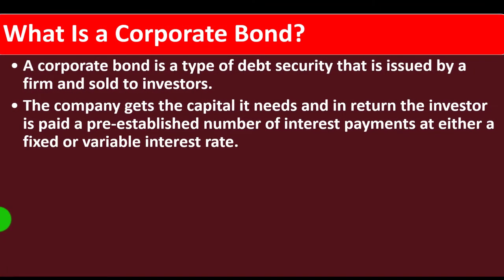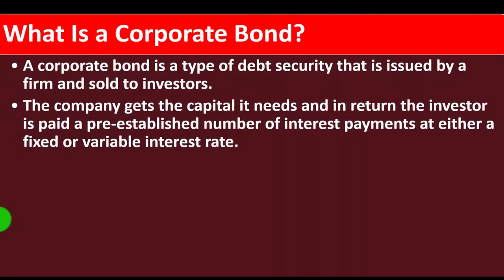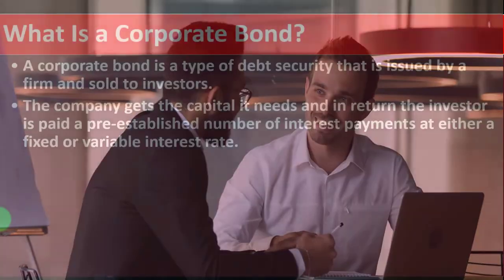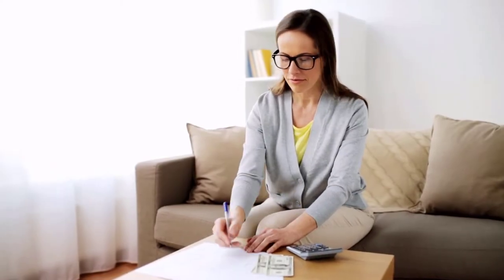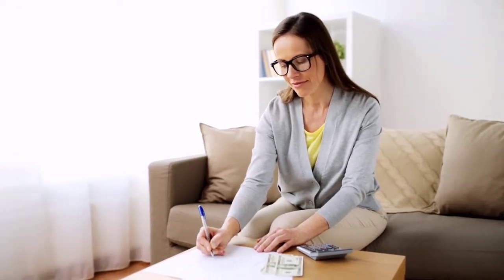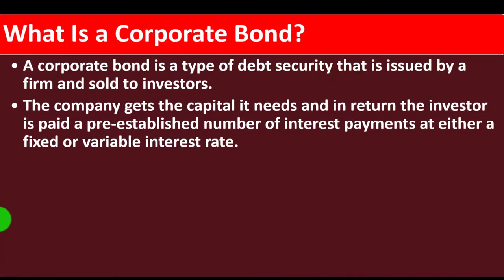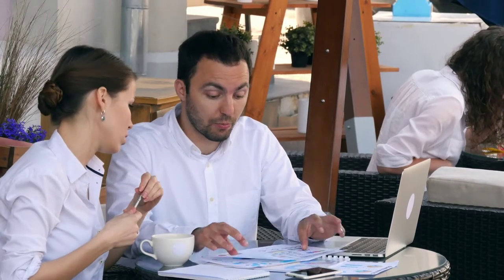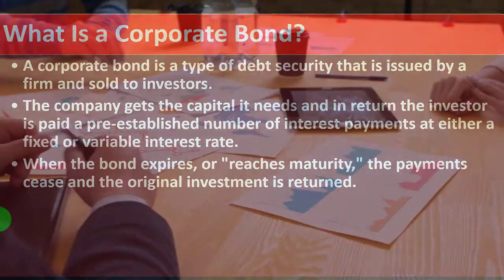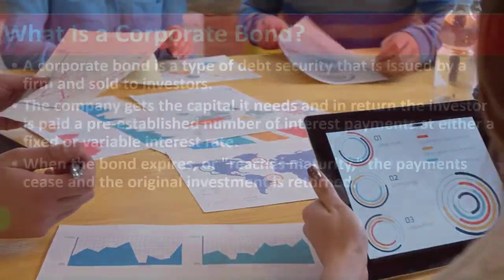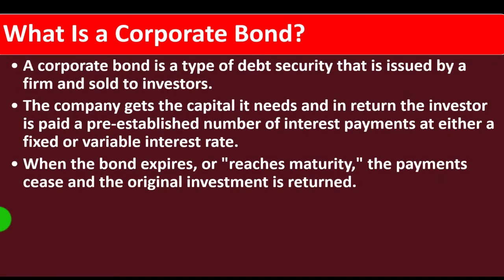The company gets the capital it needs, and in return the investor is paid a pre-established number of interest payments at either fixed or variable interest rates. With corporate bonds, we typically think of a fixed rate with semi-annual payments — a standard structure where we can calculate the ending amount at maturity and compare streams of payments. Government bonds are usually lower risk than company bonds, but large company bonds still carry fairly low risk with possibly a slightly higher return.